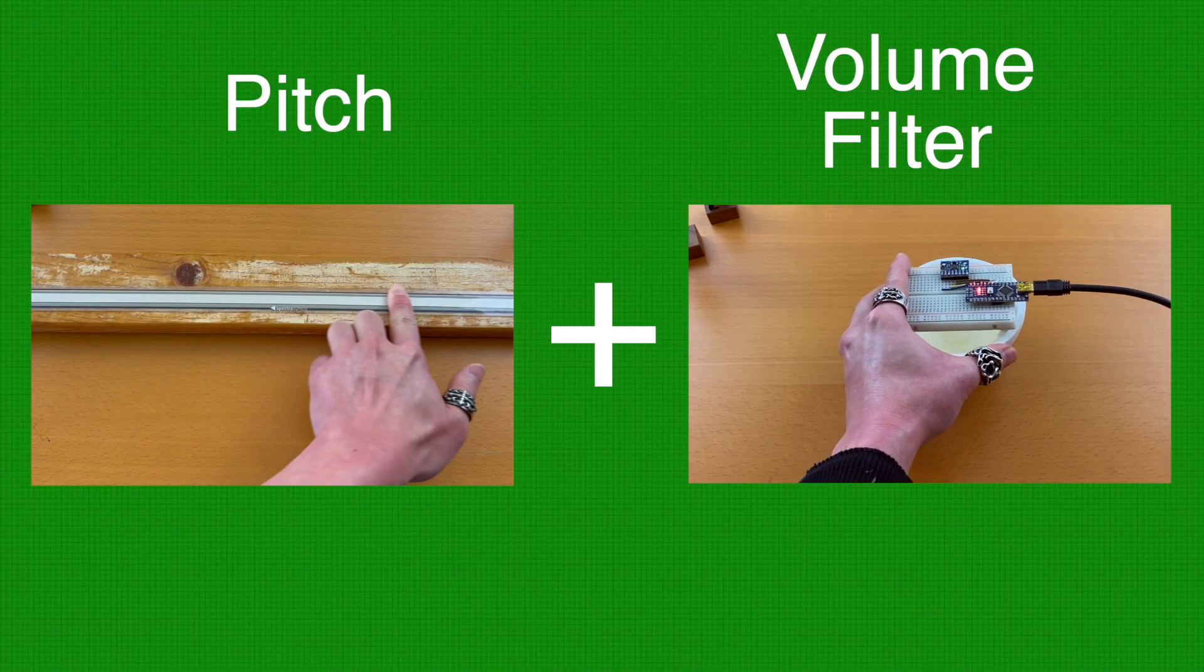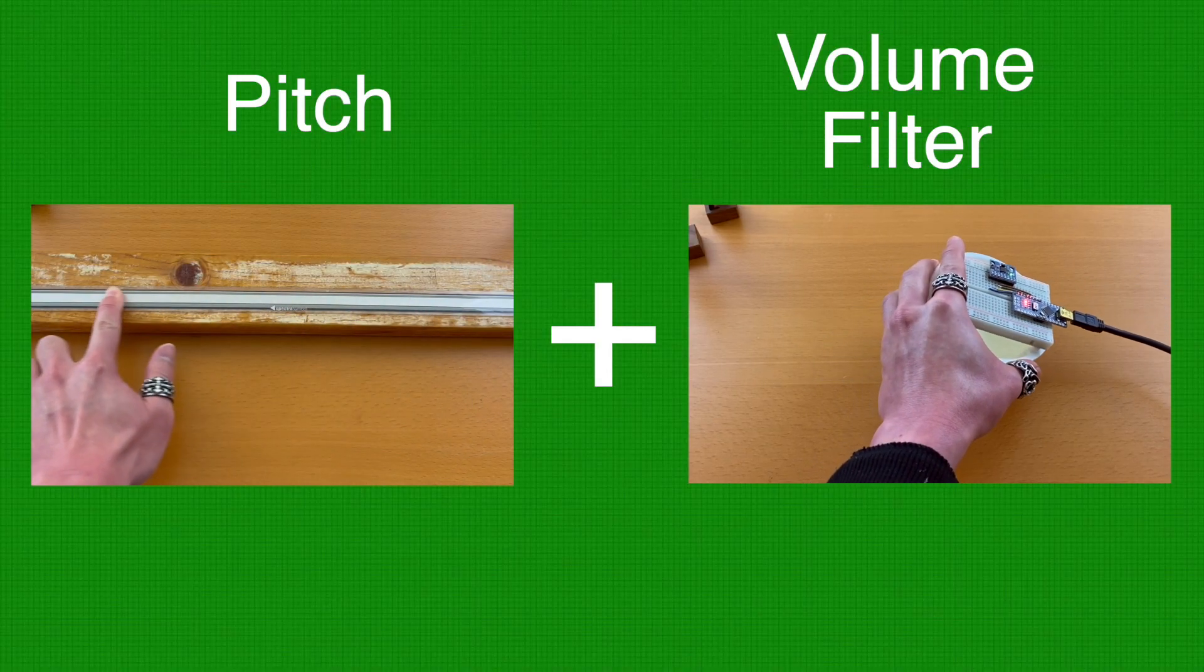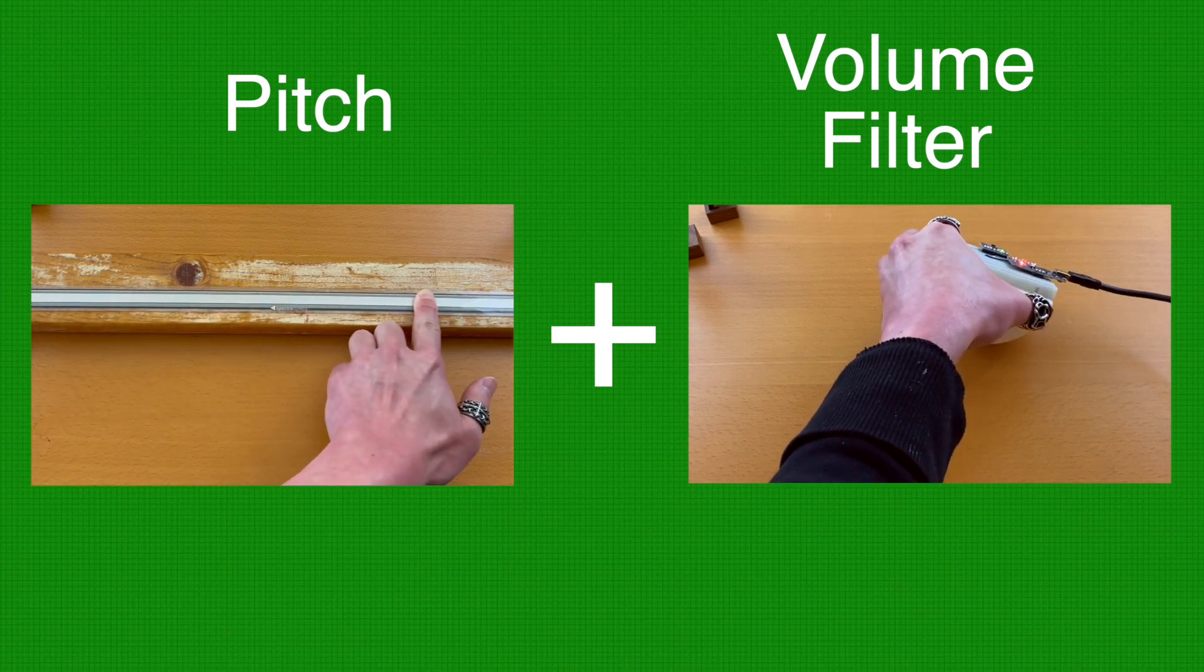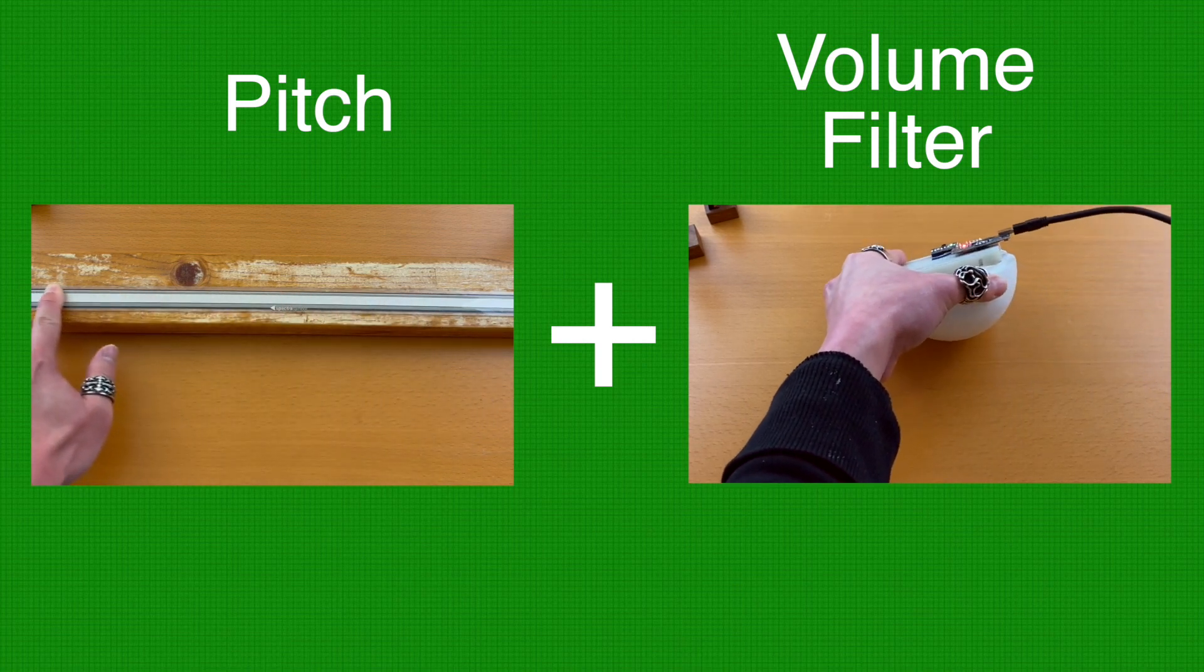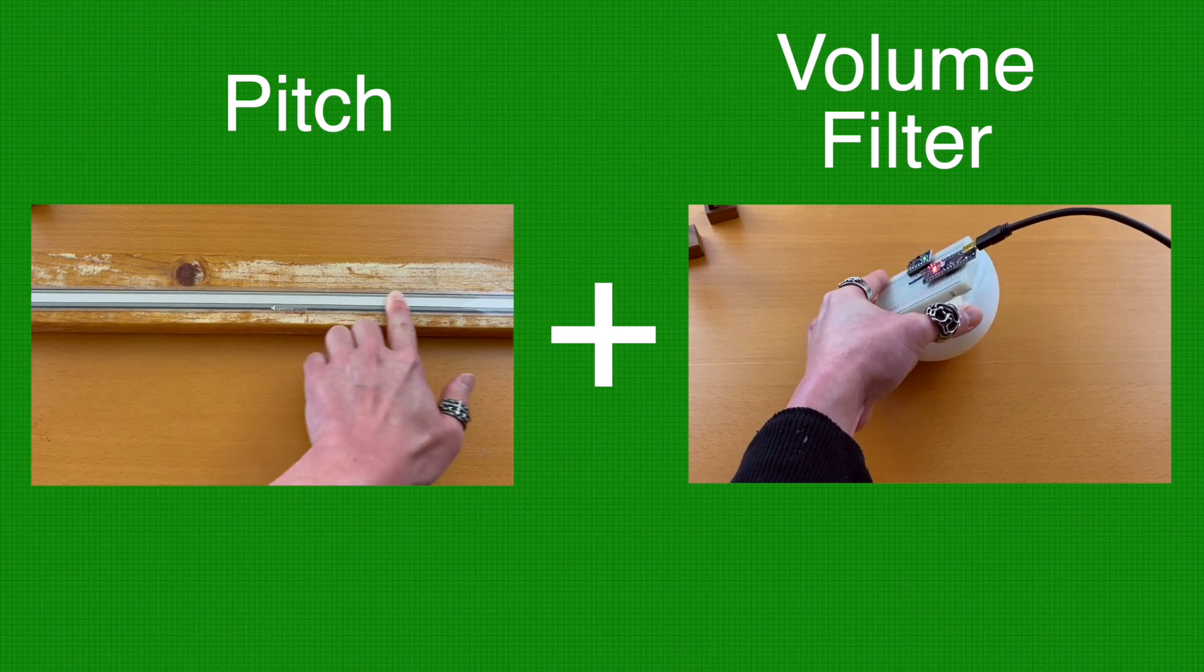Of course, we can use different sensors like an accelerometer, which provides us with two simultaneous controls. But what if we wanted to add even more synth parameters, like FM synth modulation for example.